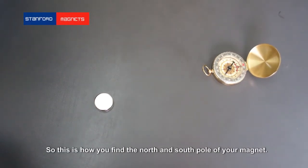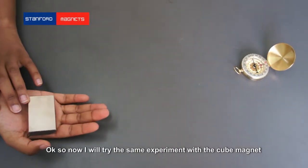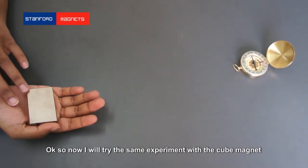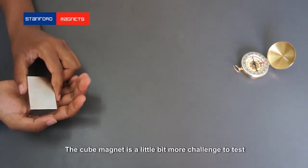So this is how you find the north and south pole of your magnet. Ok, so now I will try the same experiment with a cube magnet. With cube magnets they are a little bit more challenging to test.